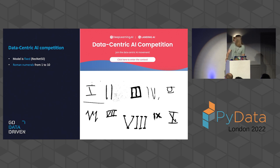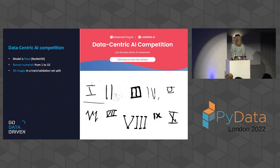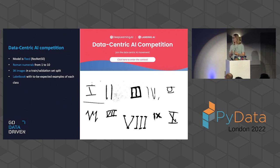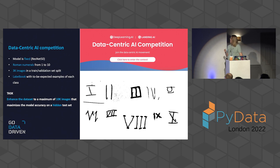The competition was about handwritten Roman numerals — classifying numerals from 1 to 10. We were provided with about 3,000 images in a given train/validation split. The validation split was used for early stopping. We were also provided with a label book with examples for each class. The task was to enhance the dataset so that performance on the fixed model would improve. We were limited to five submissions per week, and could not submit more than 10,000 examples.